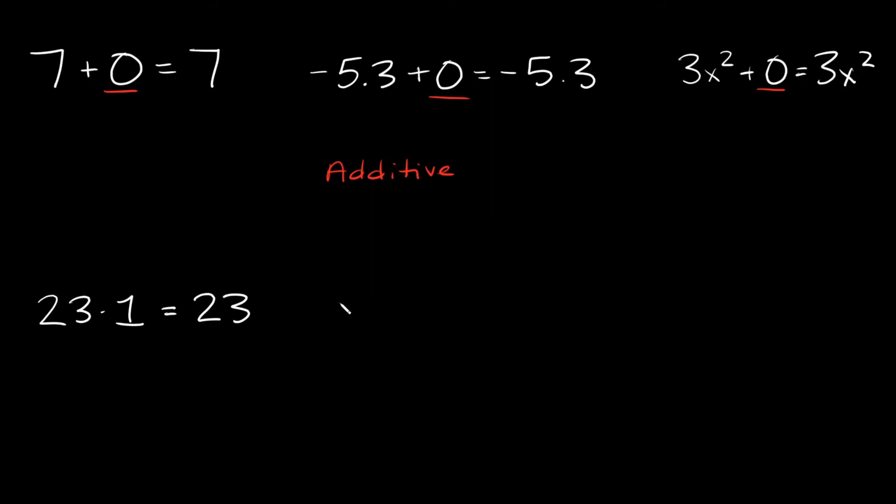Or if you had something like negative 4.20 and you multiplied that by one, your answer would still be negative 4.20. Or one more example for good measure: if you had 5n over 2y and you multiplied that by one, your answer would simply be 5n over 2y.